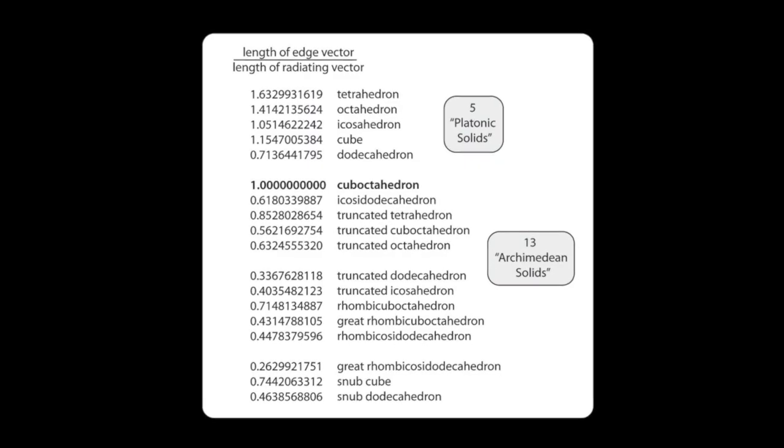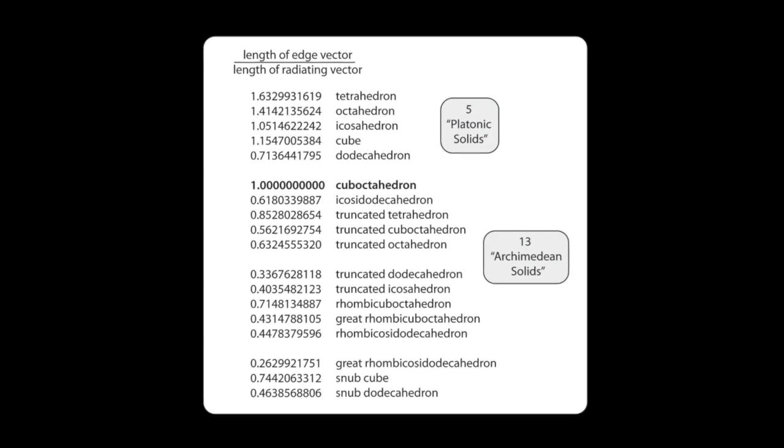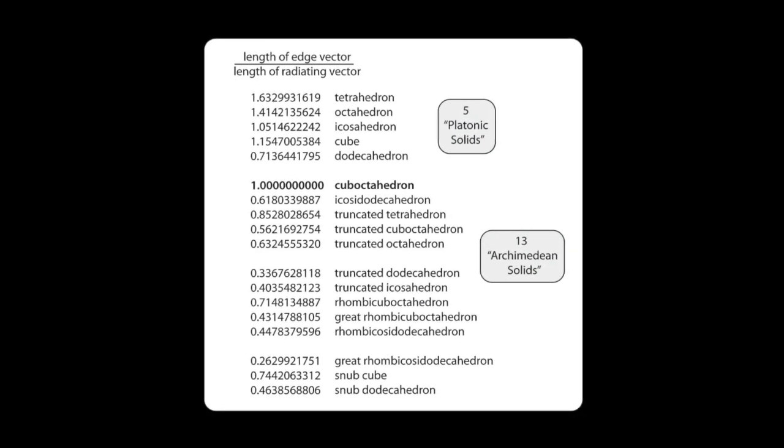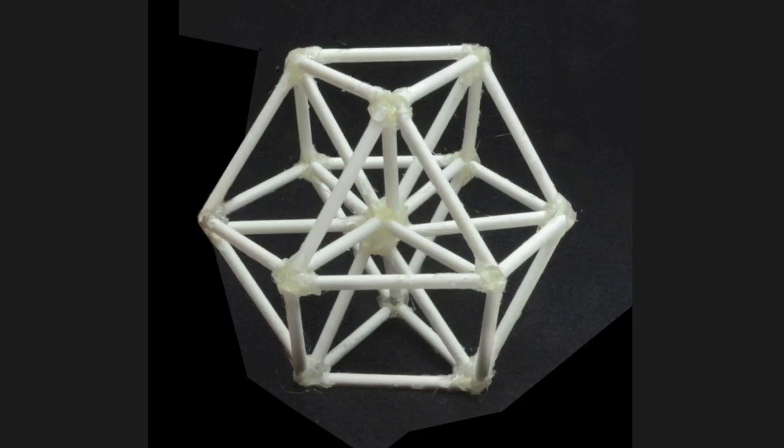The cube octahedron is special. Out of all the five platonic solids and the 13 Archimedean solids, the cube octahedron is the only one in which the length of the radiating vector is equal to the length of the edge vector.